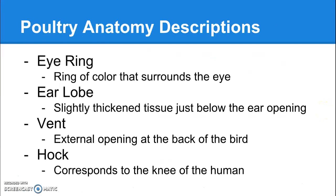The eye ring is a ring of color that surrounds the eye — it's kind of exactly what it sounds like, but they do actually have an anatomical part called the eye ring. The ear lobe is a slightly thickened tissue that sits just below the ear opening; it's very hard to see.